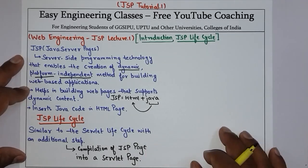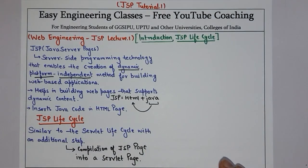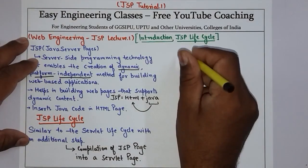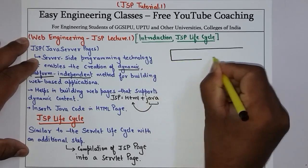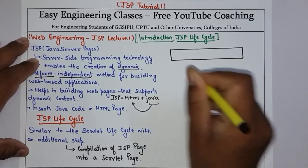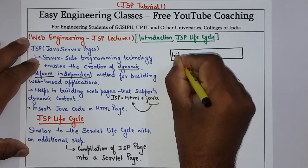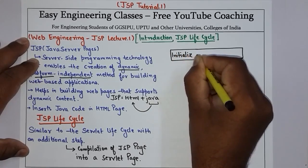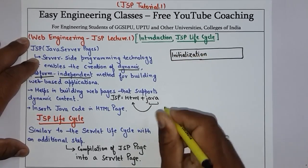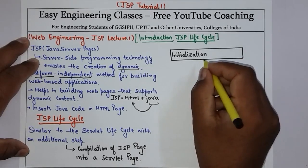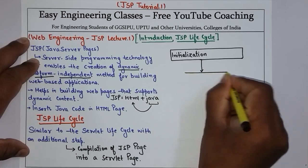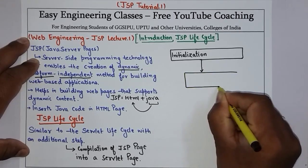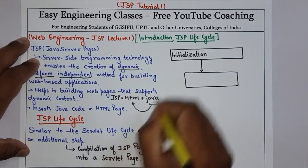Every JSP page is compiled into a servlet page before running. Now let's see the life cycle of JSP. Just like the servlet life cycle, the JSP life cycle also contains an initialization phase — the first phase in which the JSP page is initialized. We call this phase the initialization phase. Once the JSP page is initialized, the second phase is the main logic, where the services coming from the browsers are processed.